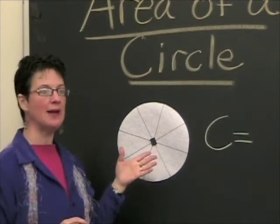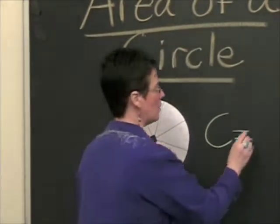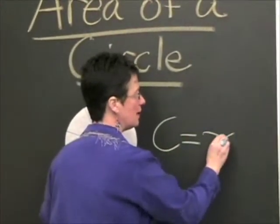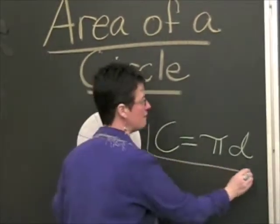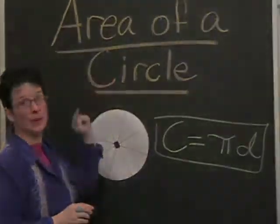All you have to do is multiply it by pi. So the circumference is equal to pi times the diameter of a circle. That's going to be very important in this formula.